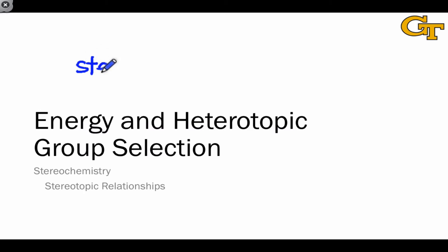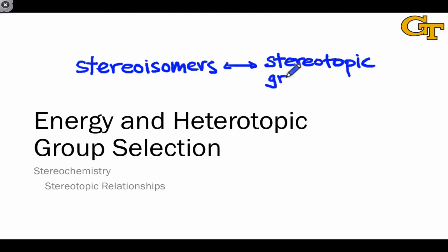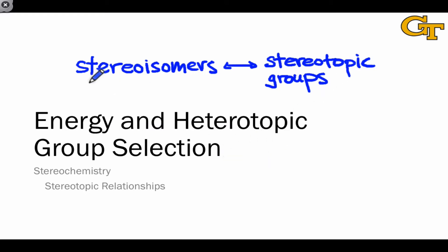In a previous video, we discussed the energetics of reactions of stereoisomers, the similarities and differences. In this video, we're going to focus on groups within a single molecule that share a stereotopic relationship. There's a correspondence between the way that stereoisomers behave and the way that the analogously related stereotopic groups behave. The energetics here are in a sense just going to reinforce what we already know about how stereoisomers behave.